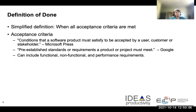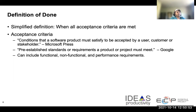Let's explore a little more about the definition of done. One simple way to think of it: a story which is done has met all the acceptance criteria for that story. There are a lot of definitions of what acceptance criteria means. For example, one definition from Microsoft says that acceptance criteria are conditions that a software product must satisfy to be accepted by the stakeholder, end user, or end customer. Another definition by Google says acceptance criteria are pre-established standards or requirements a product or project must meet. Acceptance criteria can be of multiple types, usually three types.